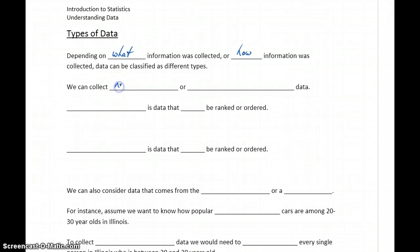First, we can collect numerical data, or we can collect data that we would refer to as categorical data. Numerical data is data that can be ranked or ordered. Another word that's used to refer to this is quantitative.